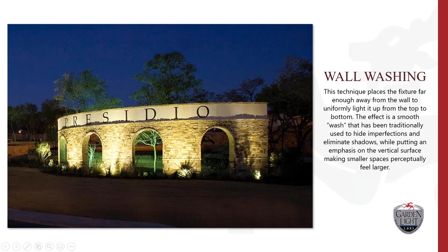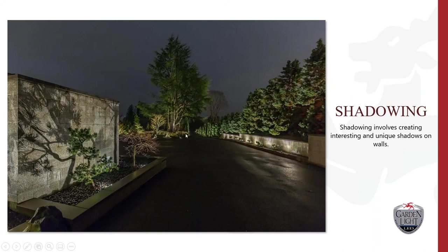Shadowing is my personal favorite technique. With plant material against a home, structure, or wall, you take a directional light, put it on a slight angle away from the plant material, and shine it up — this shadows the plant material onto the stone wall or surface behind it. When shadowing into a home, make sure to use the proper beam spread so light doesn't shine into windows.